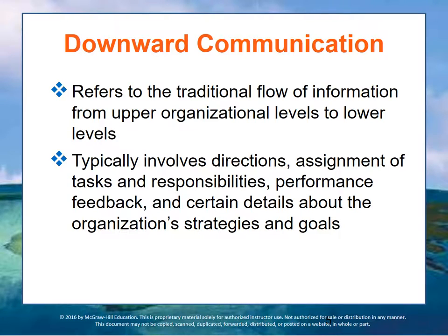Downward communication refers to the flow of information and direction from the top to the bottom. It's when your boss comes into your office and says do this or we need to be working on this project. It typically involves providing clarity and direction in terms of tasks and objectives, feedback about performance, and other details about the strategy and goals of the organization. Essentially, top-down communication is the way the work that needs to be done is clarified and defined for individuals. Upward communication balances this, ensuring that results in work groups that aren't aligned with objectives become information that higher-level management can use in decision making.